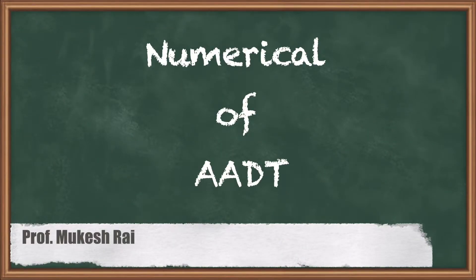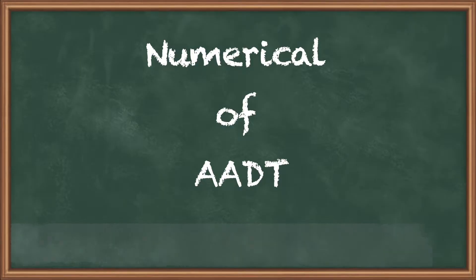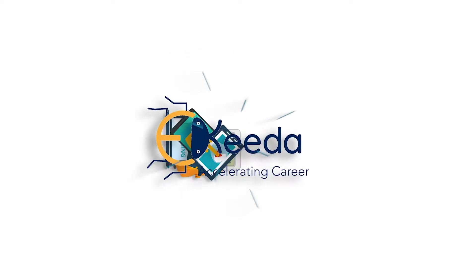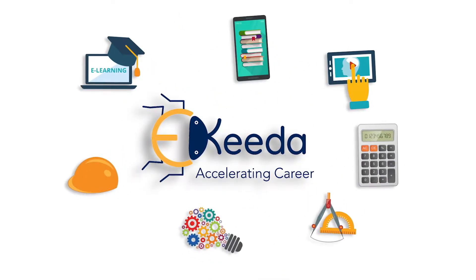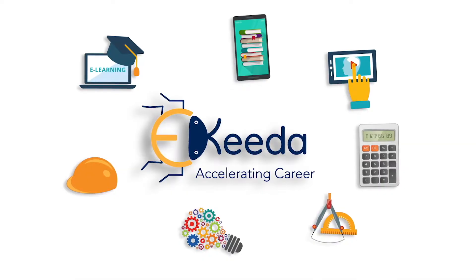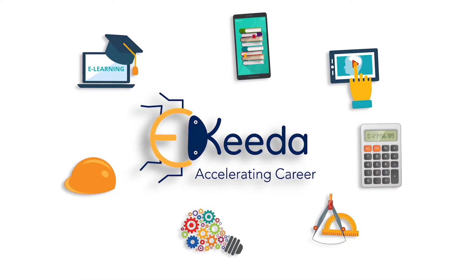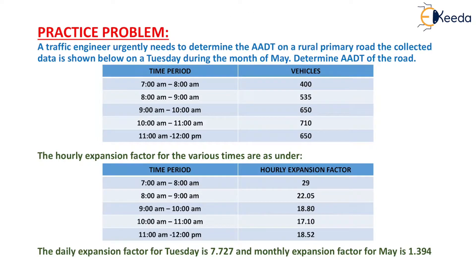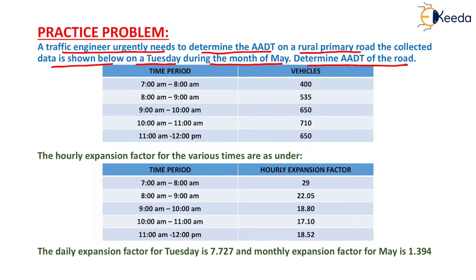Hello students, today we are going to solve a numerical on AADT. The question is given as: a traffic engineer urgently needs to determine the AADT on a rural primary road. The collected data is shown below for a Tuesday during the month of May. Determine the AADT of the road.